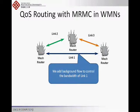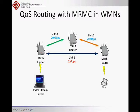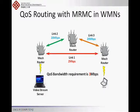Now you can see the bandwidths belonging to each wireless link shown in the figure. The video stream server and the client are connected through WMN at wireless link 1. However, the QoS requirement on bandwidth is 3 Mbps, which is higher than the bandwidth that wireless link 1 can offer.